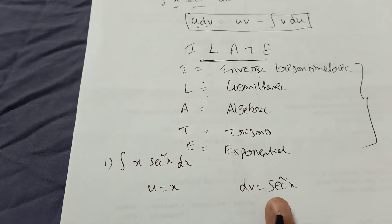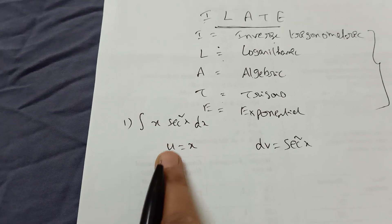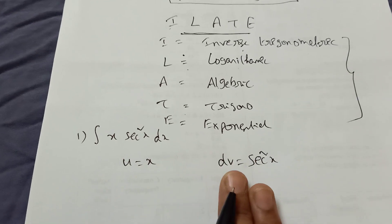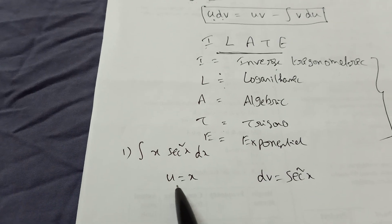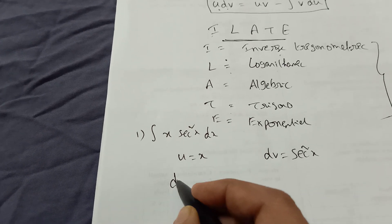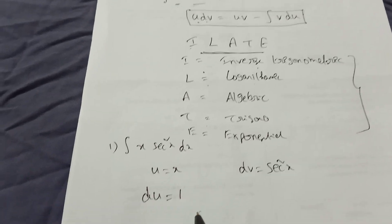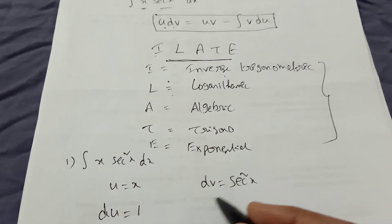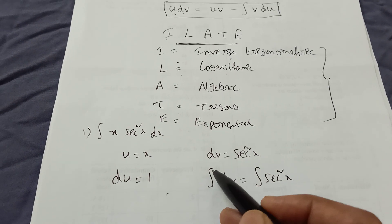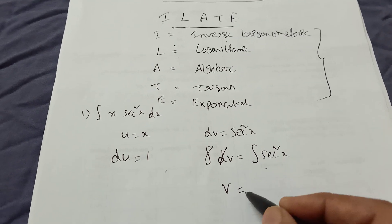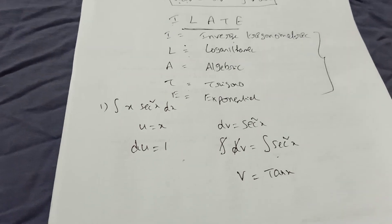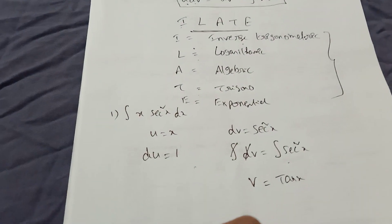By ILATE, algebraic comes before trigonometric, so take u = x and dv = sec²x dx. Now, take the derivative of u: du = 1·dx. Do integration on both sides for dv. Integration of sec²x gives v = tan x. Don't write plus c here because the problem continues.